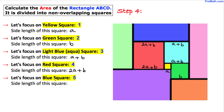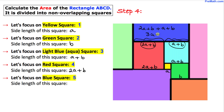Now let's focus on this blue square. The side length of this blue square is going to be the sum of the red square length 2a plus b and the aqua blue length a plus b. If we add them we get 3a plus 2b. So the side length of this blue square is 3a plus 2b.